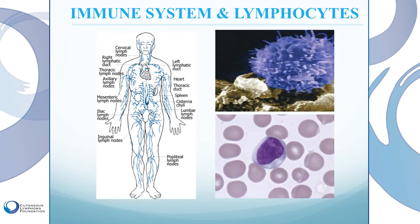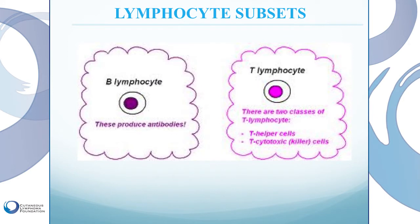On the top right you see a three-dimensional or high-power photograph of a lymphocyte. That blue sphere with different projections represents a white blood cell and all the projections of surface proteins that serve its functioning. On the bottom right you see a blood smear which shows a purple nucleated cell — that is a lymphocyte surrounded by those pale cells, which are red blood cells. They serve a very important function in our immune system.